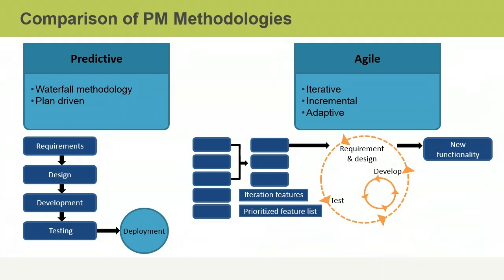Through repeated or iterative cycles, more is learned about customer needs through continuous feedback. Requirements continue to be identified and refined, and each phase or increment successively adds to the functionality of the product. The end of each phase is marked by a completed deliverable. Adaptive life cycles include very short iterations, no longer than four weeks in duration.